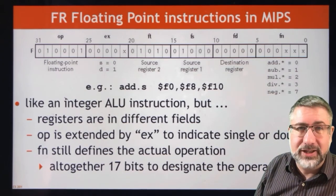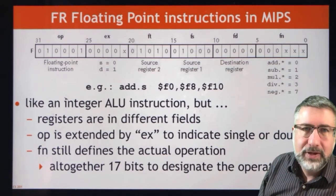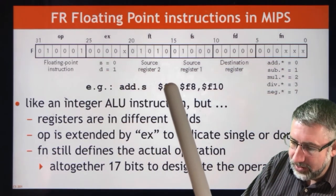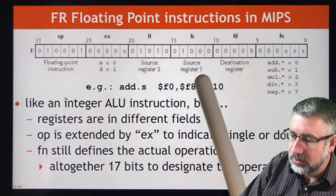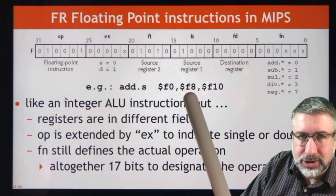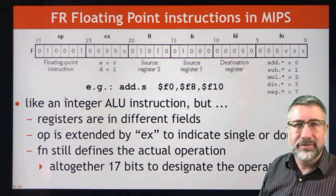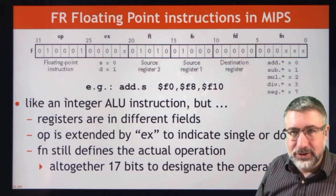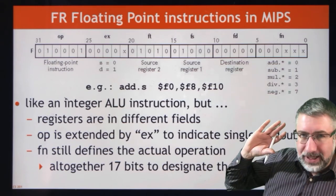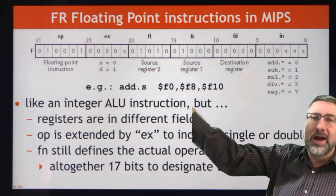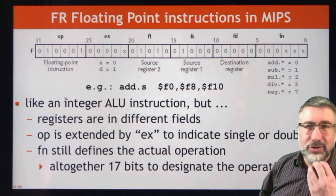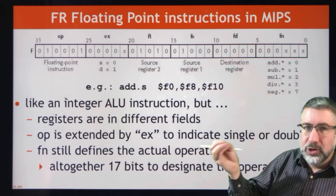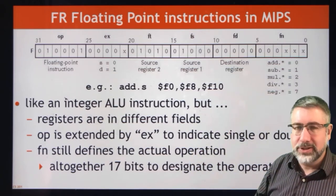As an example, ADD.S is a single precision add into register F0 of the values in registers F8 and F10. It looks like an ALU operation and acts like an ALU operation, but it operates on the coprocessor rather than the regular processor. The ALU doesn't do anything — the coprocessor is instructed to do the operation, and then the result is stored in a coprocessor register.